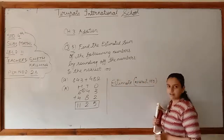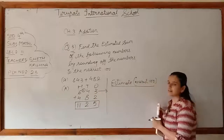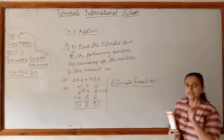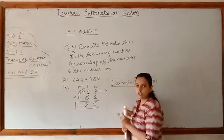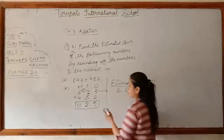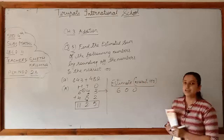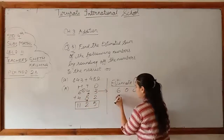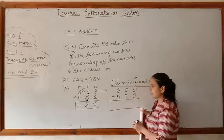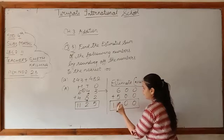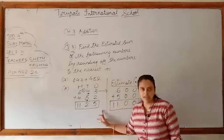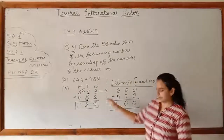Now estimate to the nearest hundred. For 643: look at the tens place — it is 4 (less than 5), so round down to 600. For 482: tens digit is 8 (5 or more), so round up — 4 becomes 5, giving 500. Add the rounded values: 600 + 500 = 1,100. This is the estimated sum.